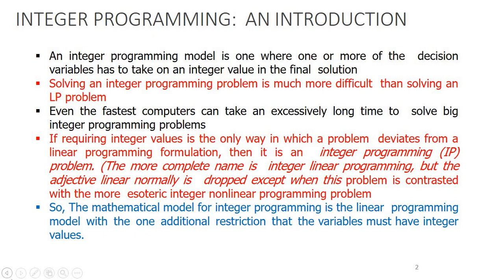We will be able to compare and distinguish similarities between integer programming and linear programming. Even the fastest computers can take an excessively long time to solve big integer programming problems. If requiring integer values is one way in which a problem deviates from a linear programming formulation, then it is an integer programming, or IP, problem. The mathematical model for integer programming is a linear programming model with one additional restriction: the variables must be integer values.